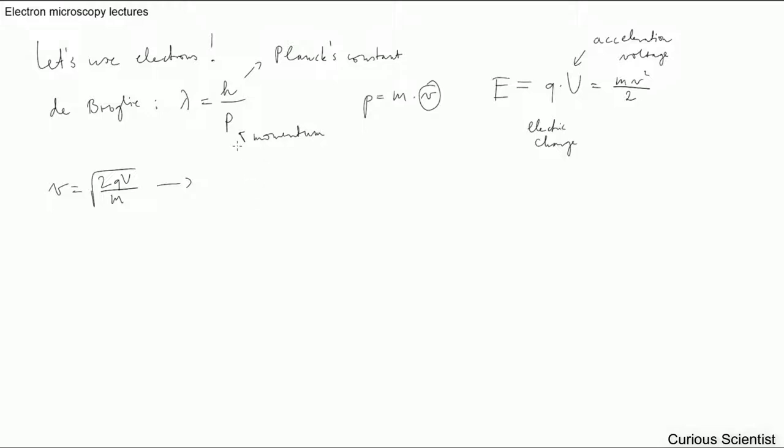We convert the potential energy into kinetic energy. Energy is basically Q, which is the electric charge, times V, the acceleration voltage. This equals the kinetic energy. We can obtain the speed of the electron, or the velocity, which is basically the square root of 2QV divided by M. Then we can substitute this to the momentum. What we get here is H divided by the square root of 2MQV.